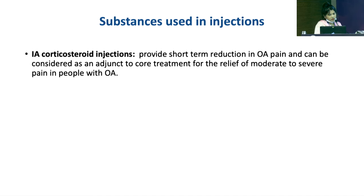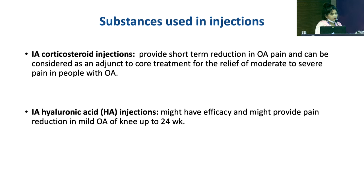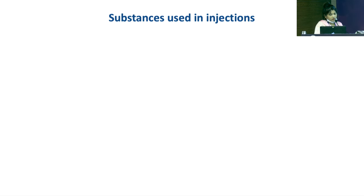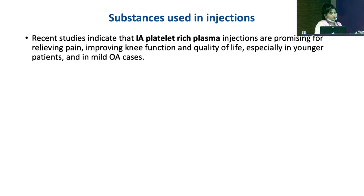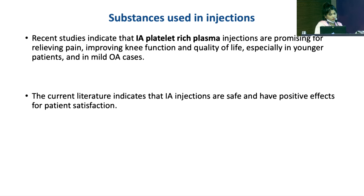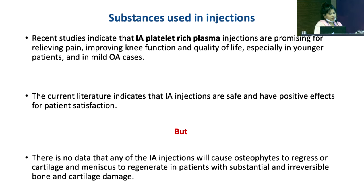The substances used in intra-articular injections are corticosteroids, hyaluronic acid injections, and platelet-rich plasma, which has recently come into use. Current literature indicates that intra-articular injections are safe and have positive effects for patient satisfaction, but there is no data that any intra-articular injection will cause osteophytes to regress or cartilage and meniscus to regenerate in patients with substantial and irreversible bone and cartilage damage.